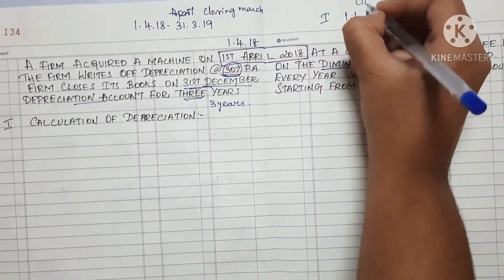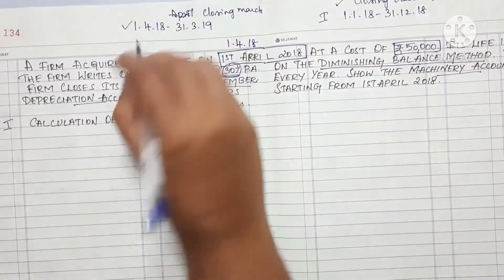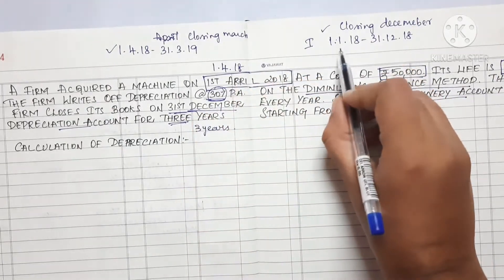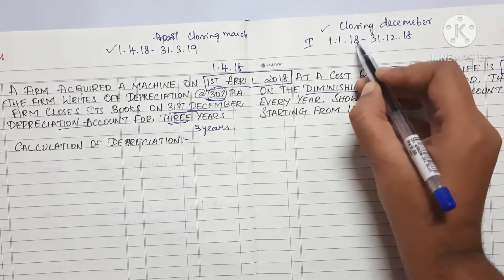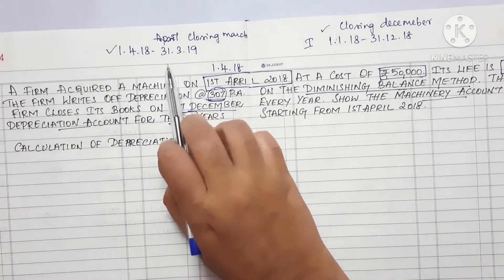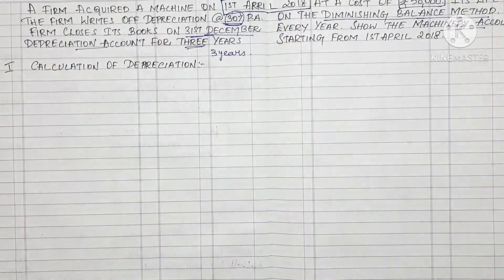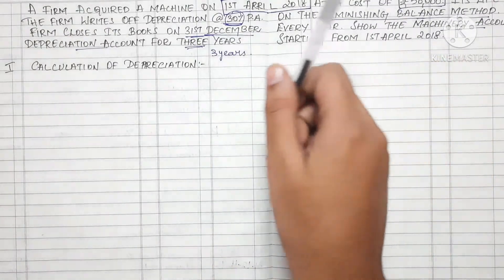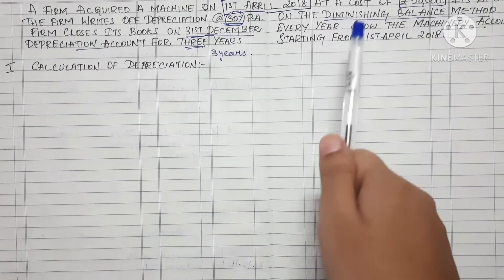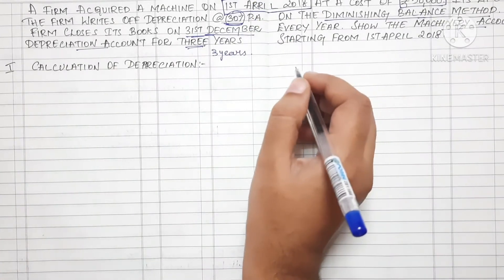The closing month is December. We note that the closing month is December. The two dates are important: the acquisition date is 1st April 2018, and the closing is 31st December. When this closing is opened by December 31st, we will make the year. Now we call this the diminishing balance method, and we detect the amount of depreciation balance. We are using the Ledger directly.